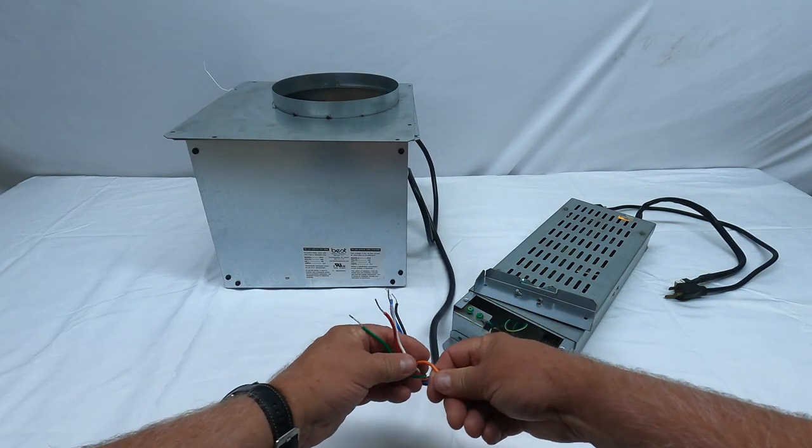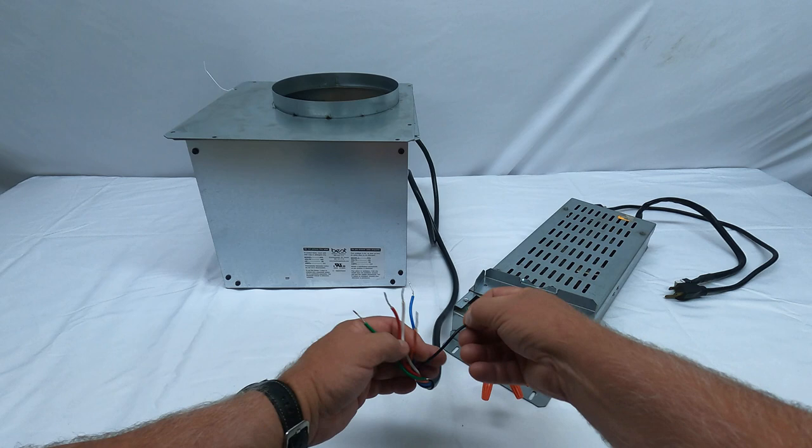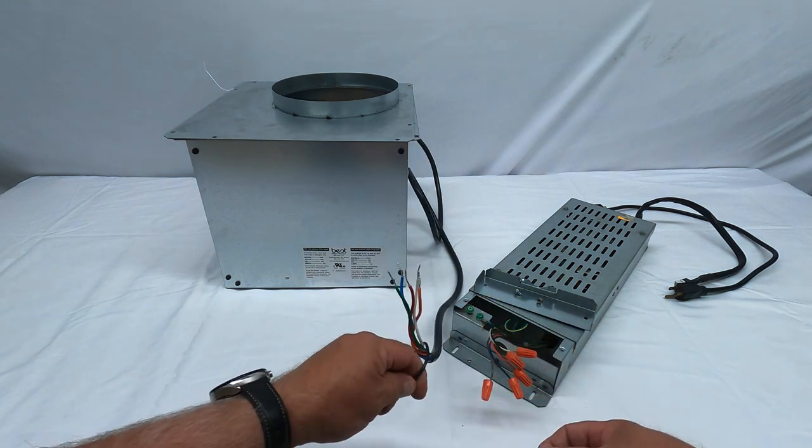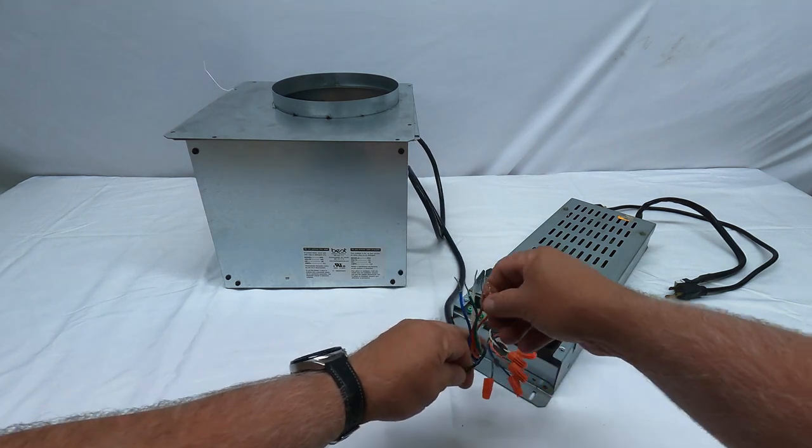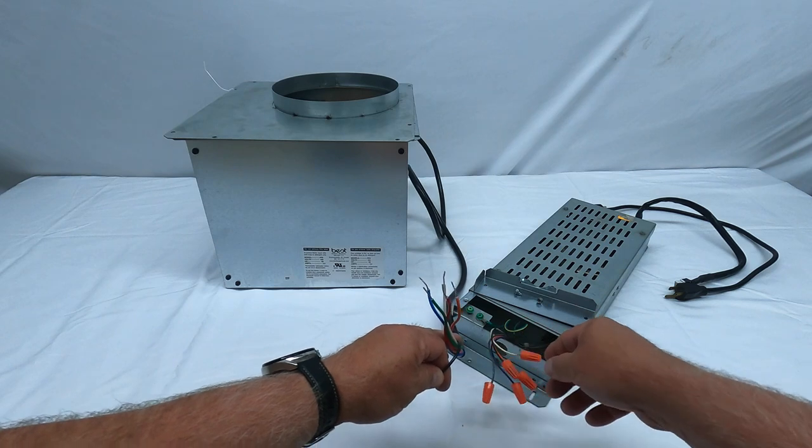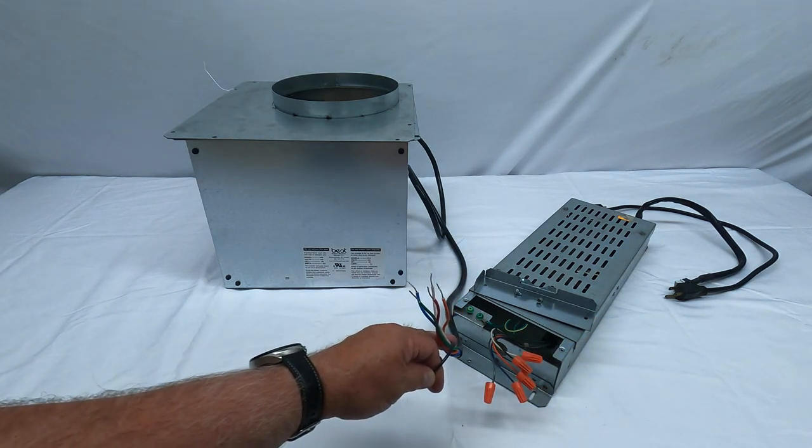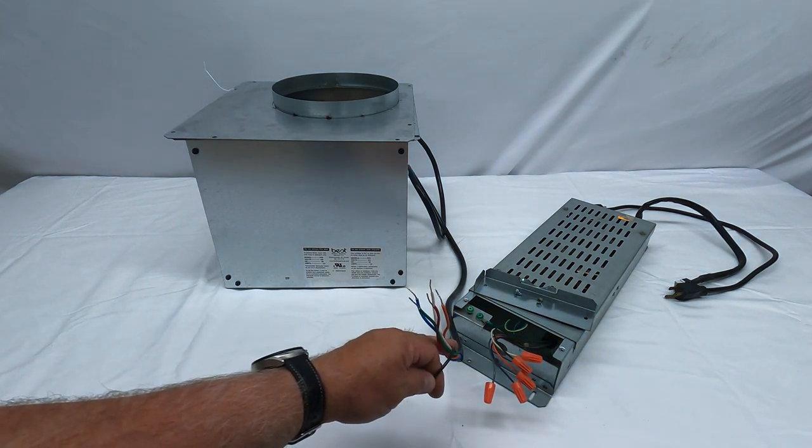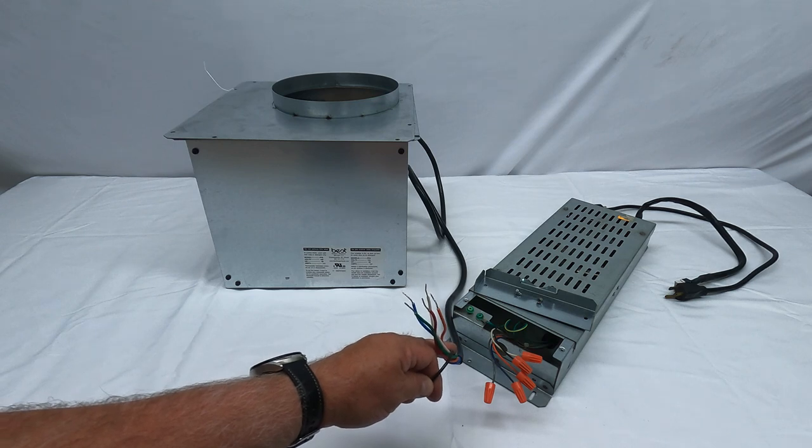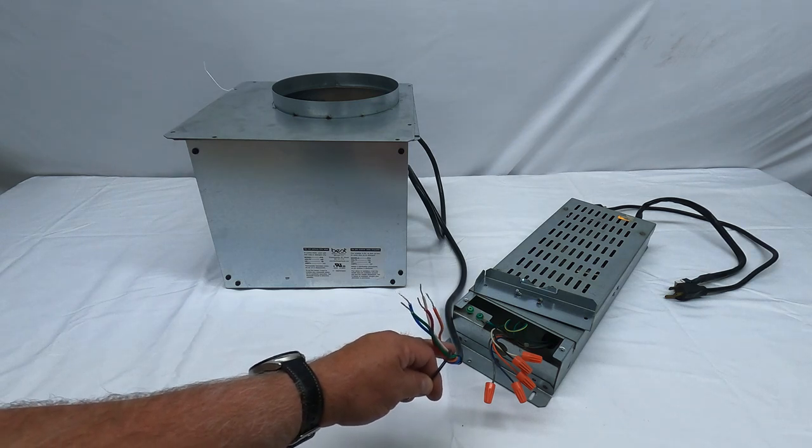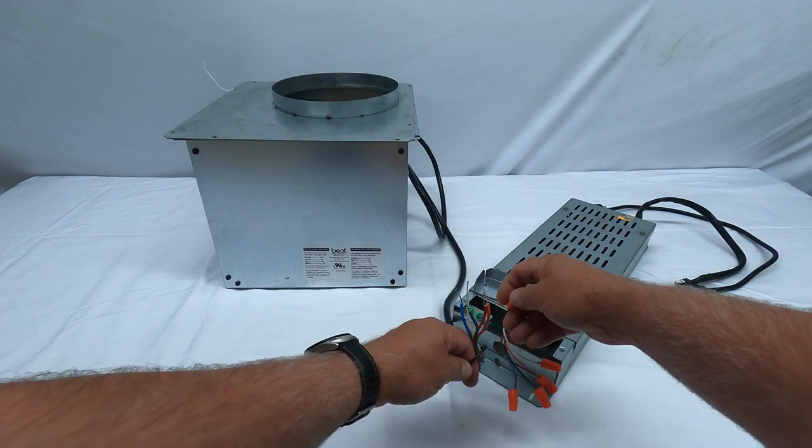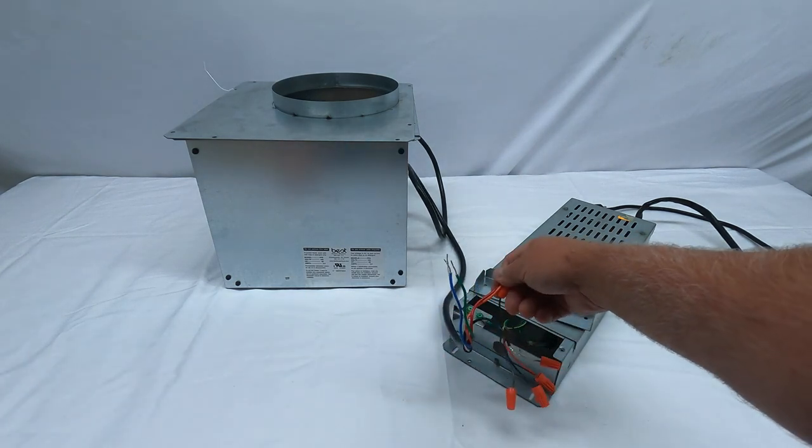What that's going to do is it's going to drop that speed for you. So the black here would be capped. So it's going to be, again I'm going to read, it's going to be green to green, blue to blue, gray to red, orange to orange, and the black is going to tie in with the orange actually.